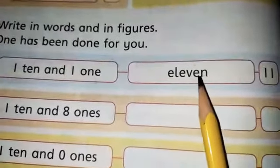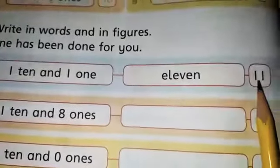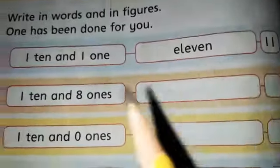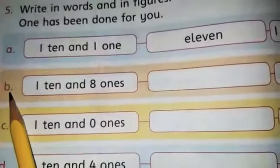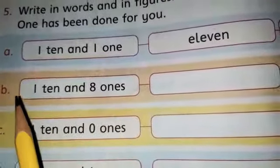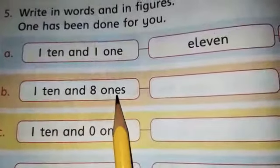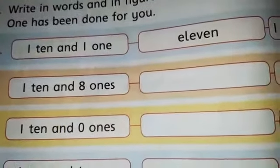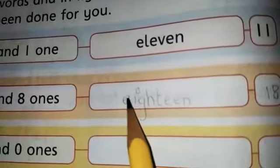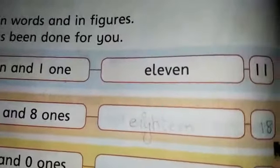Now in part b one ten and eight ones. One ten and eight ones becomes eighteen. Right, eighteen here. E-I-G-H-T-E-E-N eighteen, eighteen.